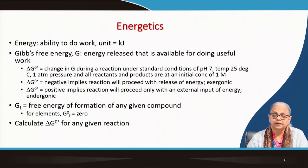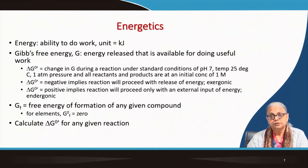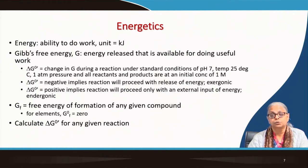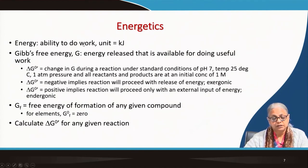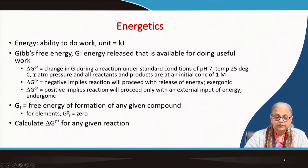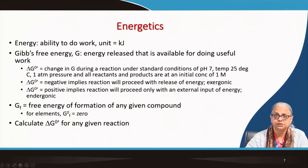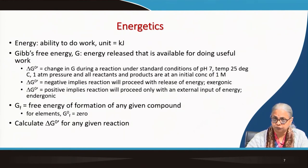Let us now come to another aspect: energy. How does the organism derive energy, and what is the form of this energy? Energy is the ability to do work, measured in kilojoules. Gibbs free energy G is the energy available for doing useful work. Delta G zero dash is the change in free energy during a reaction under standard conditions: pH 7, temperature 25°C, one atmosphere pressure, and all reactants and products at an initial concentration of one molar.